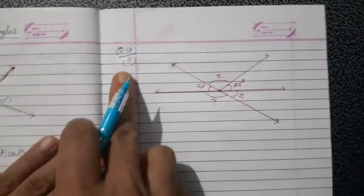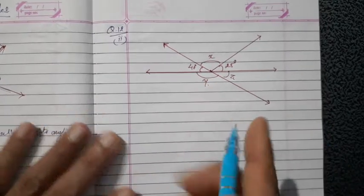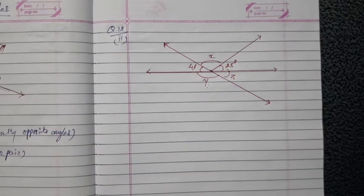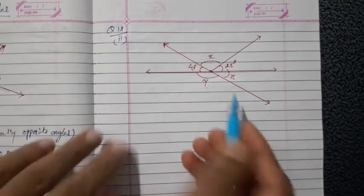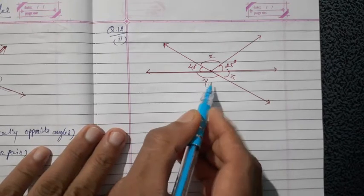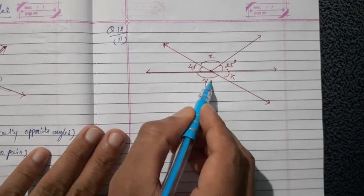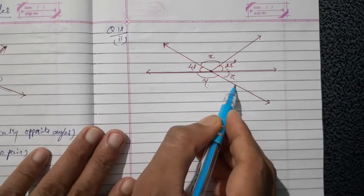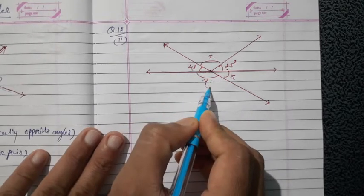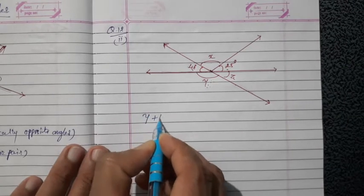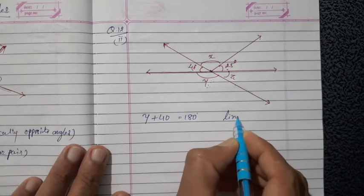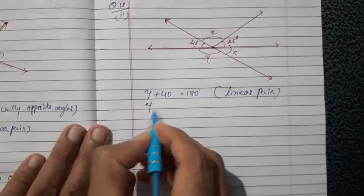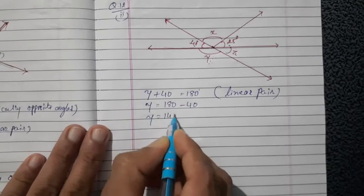Now in question number 12, the second figure has measurements of two angles given: 40 degrees and 25 degrees, and x, y and z are to be found. We find the value of y first. y and 40 degrees have one common arm and the other two arms make a line, means they are opposite rays, so they are a linear pair. So y plus 40 equals 180. Change the side of 40: y equals 180 minus 40, y equals 140 degrees.